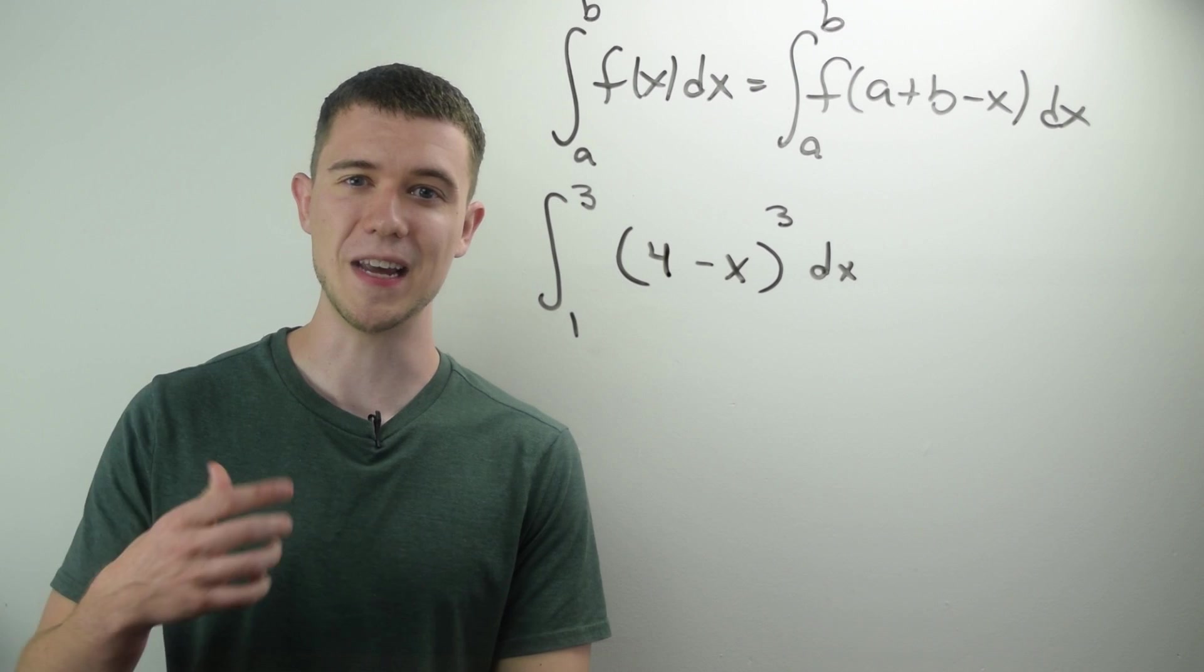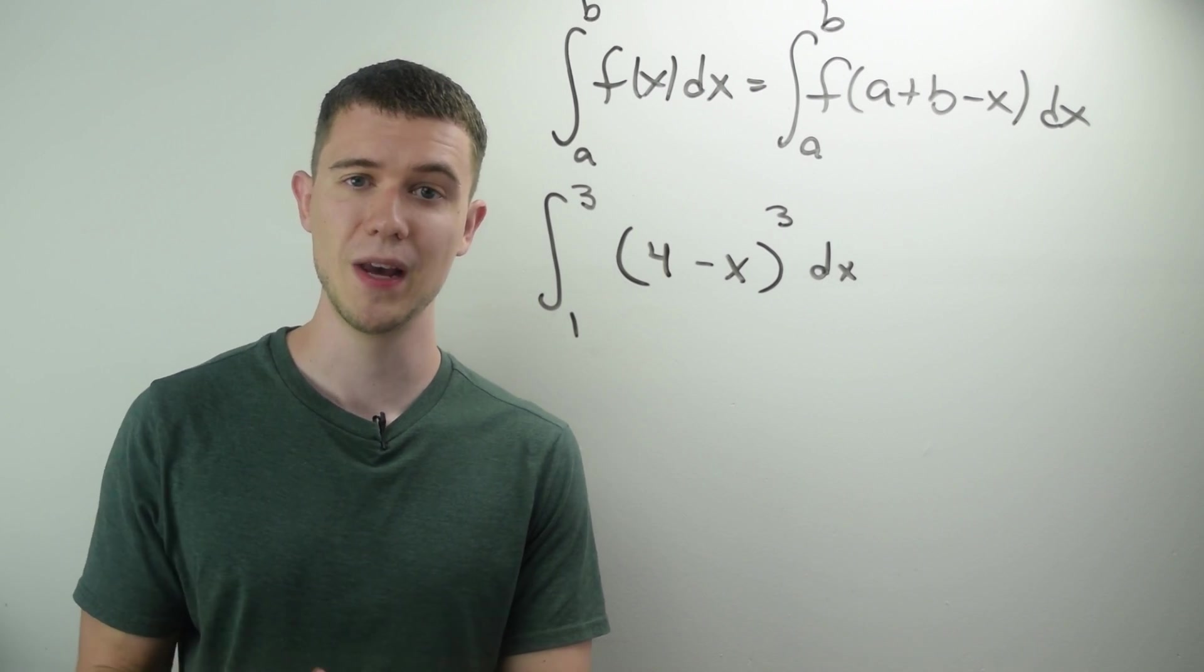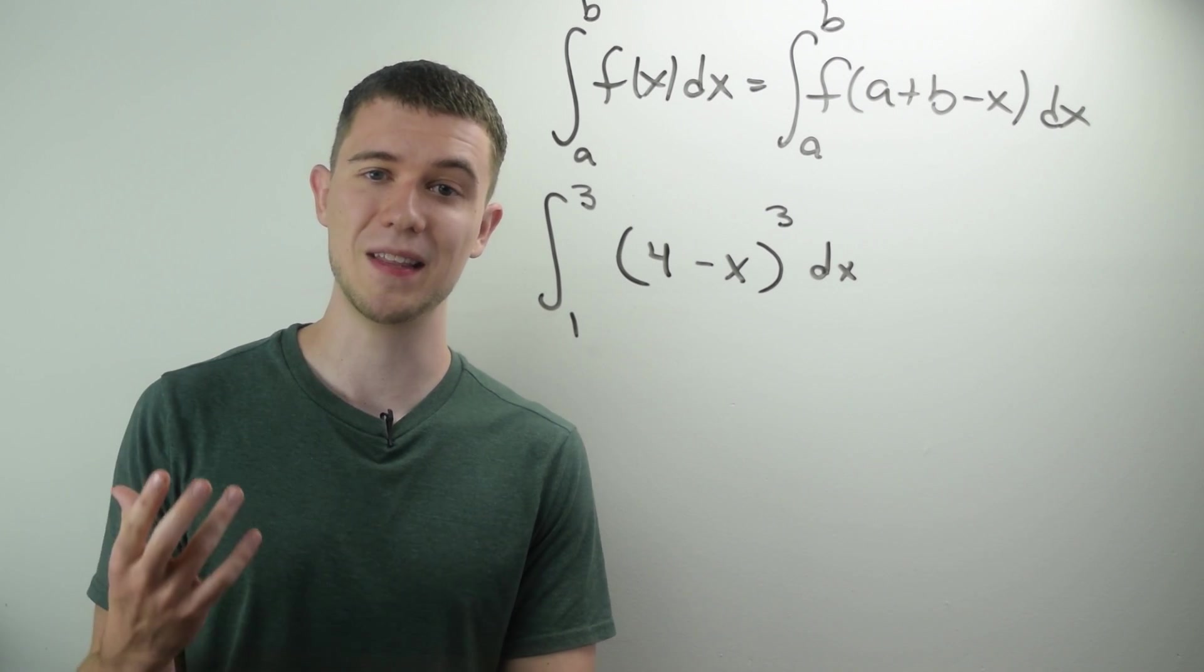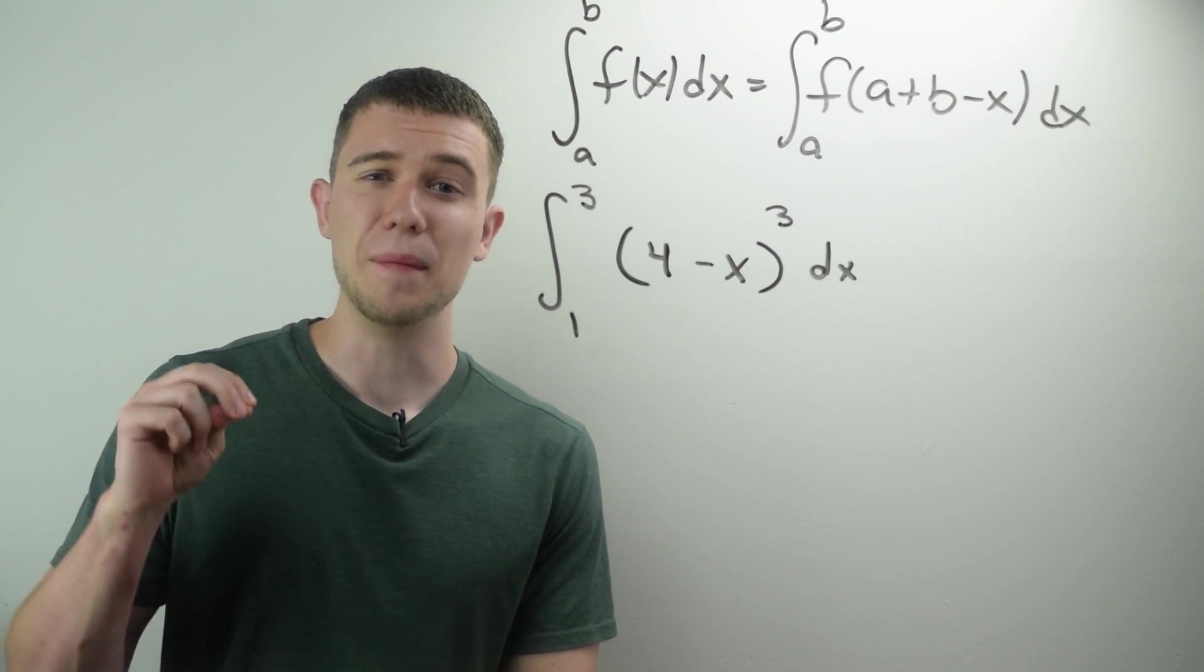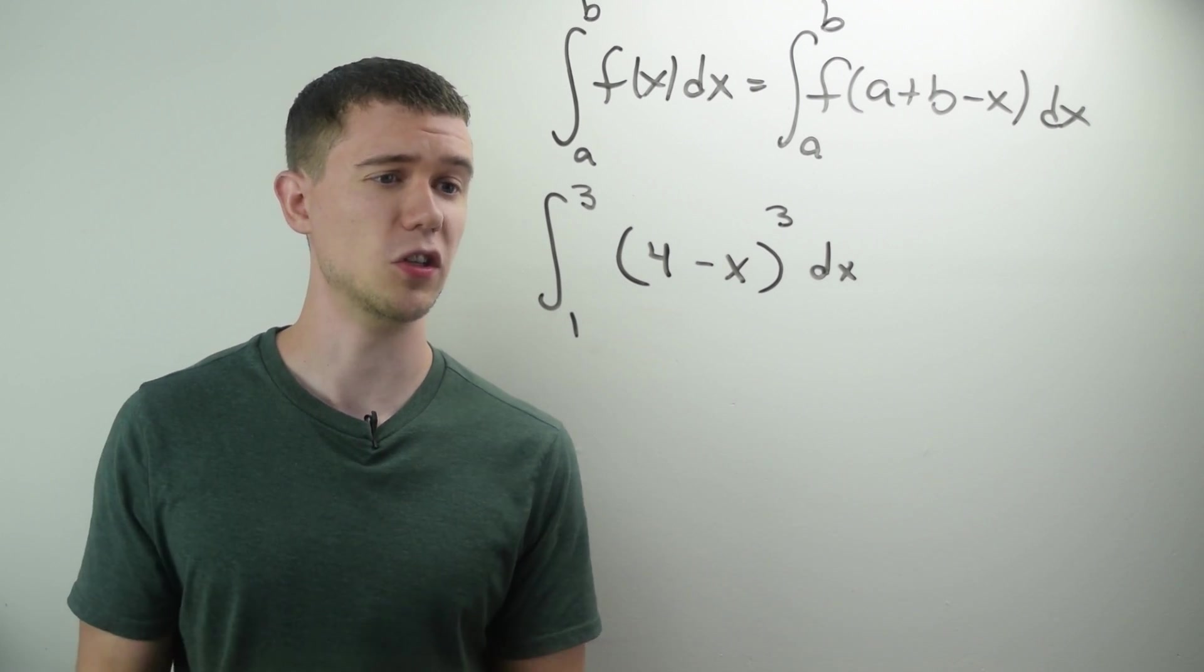So here's an example. It's the definite integral from 1 to 3 of 4 minus x quantity cubed. Now, of course, you could do a u substitution to solve this problem. You could also expand this out by doing a bunch of distributing. But if I use this trick, it might save me some time. It might save me some valuable minutes taking an exam. So let's see what I should do.